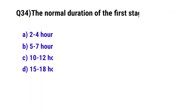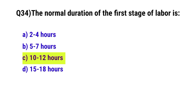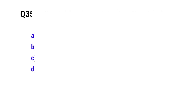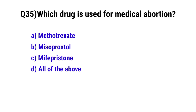Question number 34: The normal duration of the first stage of labor is? The correct option is C: 10 to 12 hours. Question number 35: Which drug is used for medical abortion? The correct option is D: All of the above.